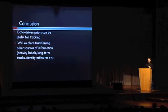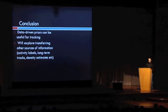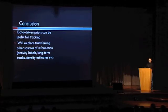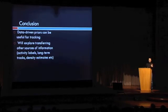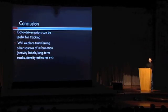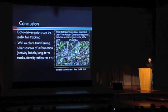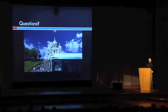In conclusion, we've shown that data-driven priors can be useful for tracking, and specifically they perform well when we have rare behaviors. In general, we're interested in not just applying this to tracking — we could transfer other things like activity labels, long-term tracks, and density estimates, and there could be other applications. One thing to note is that in all experiments, you have to initialize the tracker position manually, though there are other works that automatically detect and track persons, which we've also explored in a poster at this conference, together with density estimates.